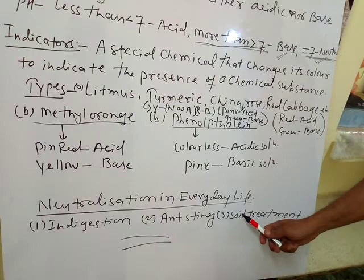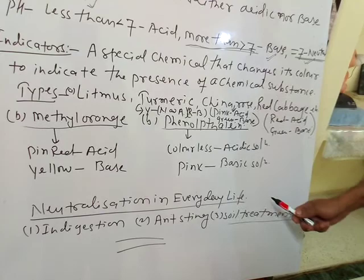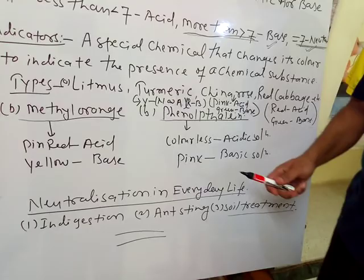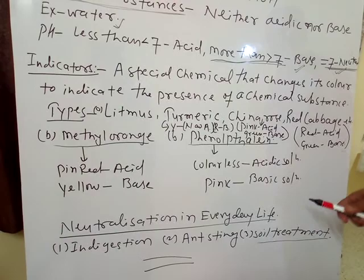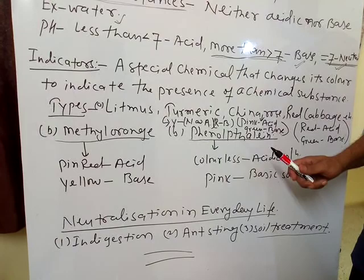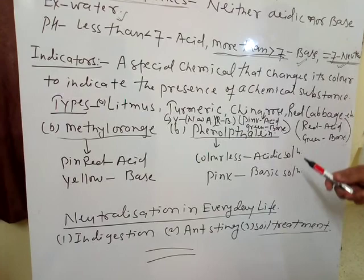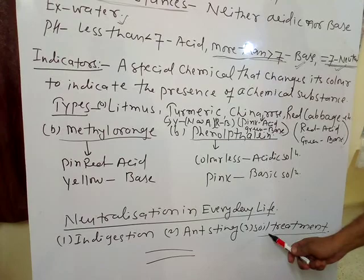The third use of the neutralization process in daily life is soil treatment. Sometimes soil becomes acidic. To remove the acidic property of the soil, we add a base like calcium hydroxide, quicklime, or slaked lime into the soil so that the soil becomes neutral. After the soil becomes neutral, we can grow different kinds of crops.